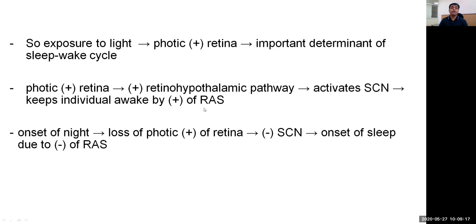The suprachiasmatic nucleus keeps the individual awake by stimulating reticular activity. At onset of night, the light stimulus is removed, causing loss of stimulation of the retina. Inhibition of the suprachiasmatic nucleus takes place and there is onset of sleep due to inhibition of reticular activity.